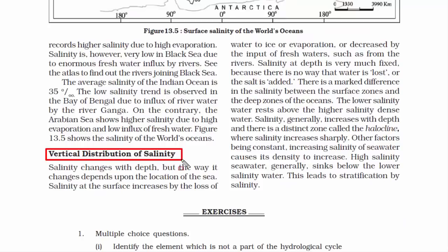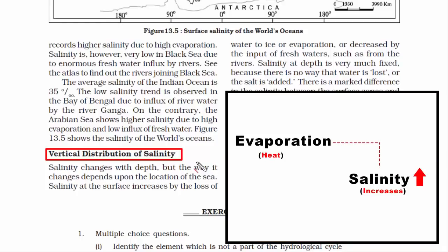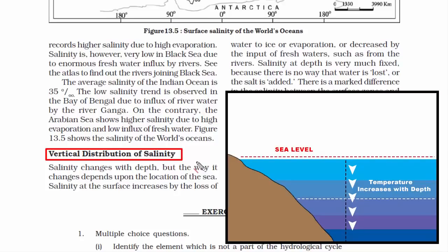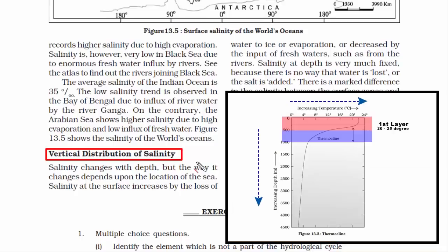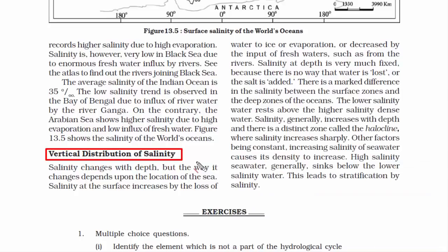The last topic is vertical distribution of salinity — meaning changes with respect to depth. At the surface, salinity increases due to evaporation and decreases with input of fresh water from rivers, ice, and rainfall. As we go deeper, salinity is fixed because no water is lost and no more salt is added. Salinity generally increases with depth, and there is a distinct zone called the halocline — similar to the thermocline — from where salinity increases rapidly. Cold, dense water contains more salt, so as we go deep in the ocean, temperature drops and salinity increases.